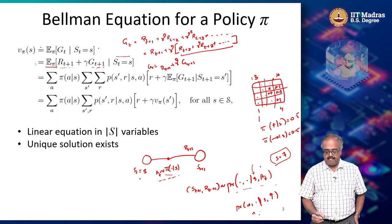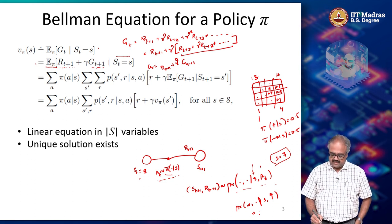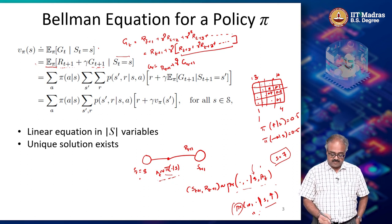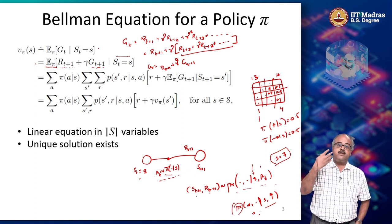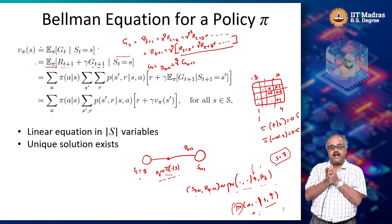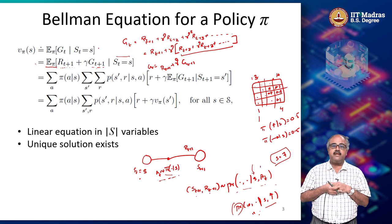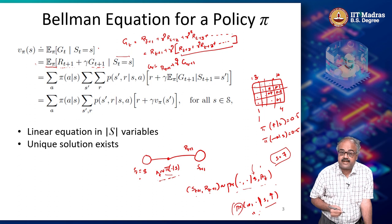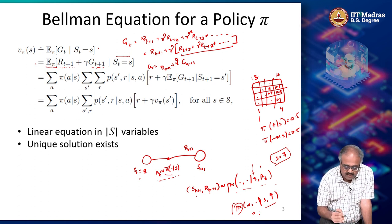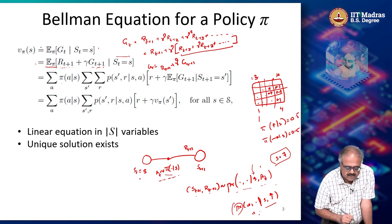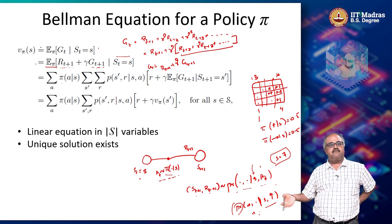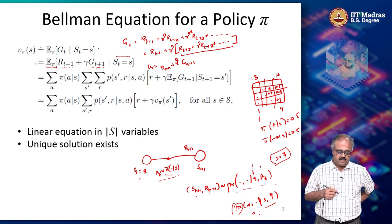That is the process by which you generate this expectation. First you sample an action from pi, then you get a next state, and once you get the next state you sample from the transition probability and reward joint distribution. That gives you the next state and next reward, and then you start the same process from the next state onwards. So that is how we compute the expectation — writing out each sampling process along the way.